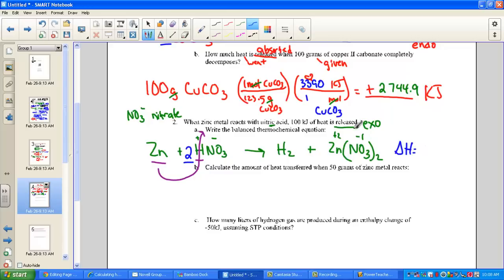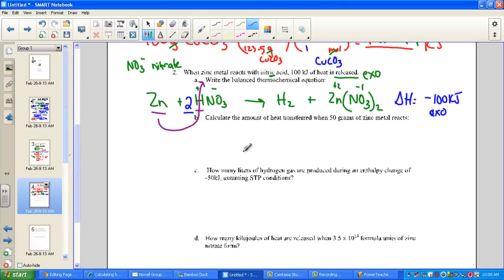Let's turn that thermochemical equation by adding on the heat. Being released is 100 kilojoules of heat. Exothermic value shows that as a negative sign. Heat being released. So here's our balanced thermo equation. Let's tackle the stoichiometry part.